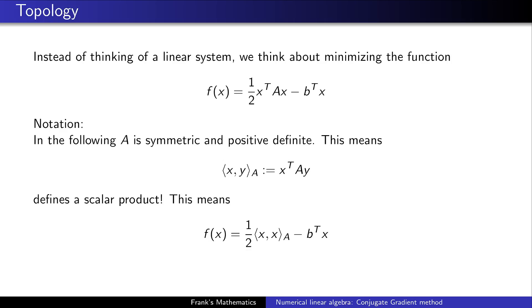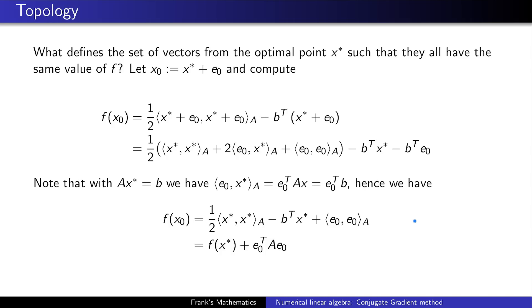This means that the following function of two arguments x and y — which is just x^T A y — is a scalar product; it's a bilinear positive definite form. Using this notation, we can rewrite our function F. We then ask ourselves: what defines the set of vectors from the optimal point x* such that they all have the same function value of F?